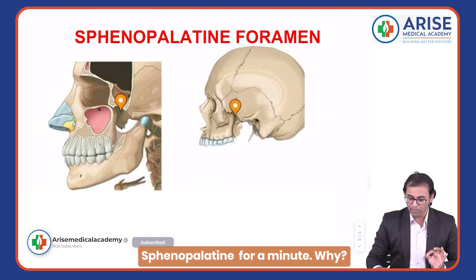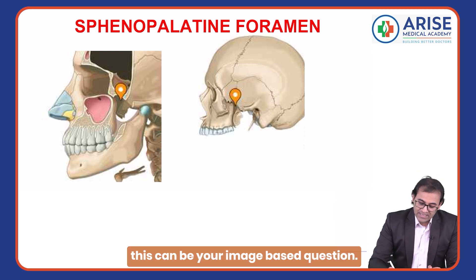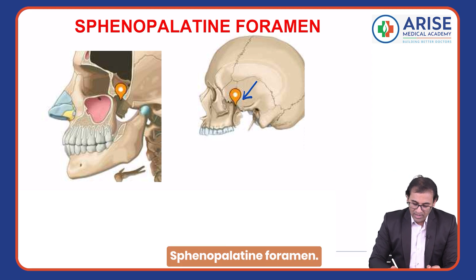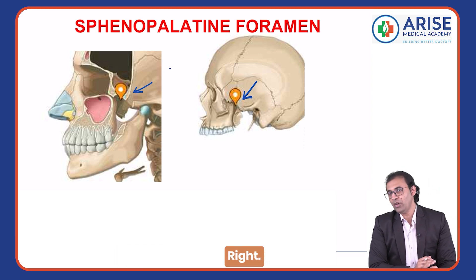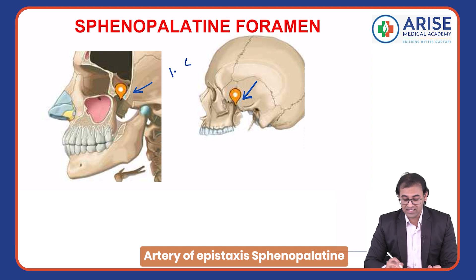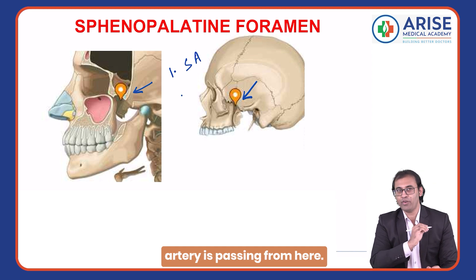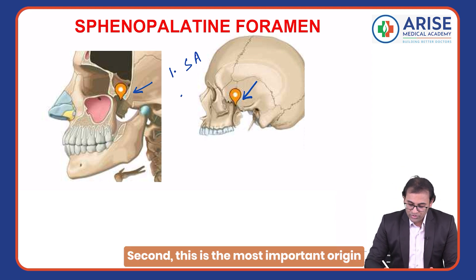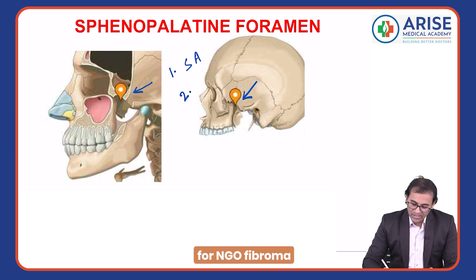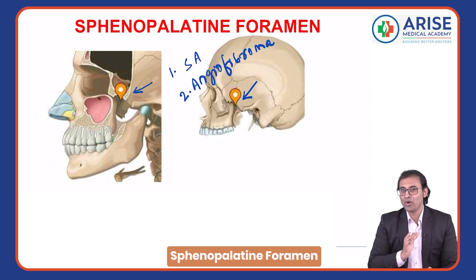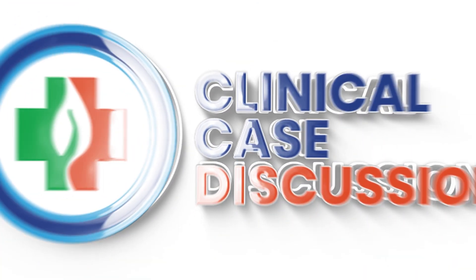We should also know about the sphenopalatine foramen — this can be an image-based question. The significance of this foramen is: first, the artery of epistaxis (sphenopalatine artery) passes from here to supply the nose. Second, this is the most important origin site for angiofibroma. These two important points about the sphenopalatine foramen must be remembered.